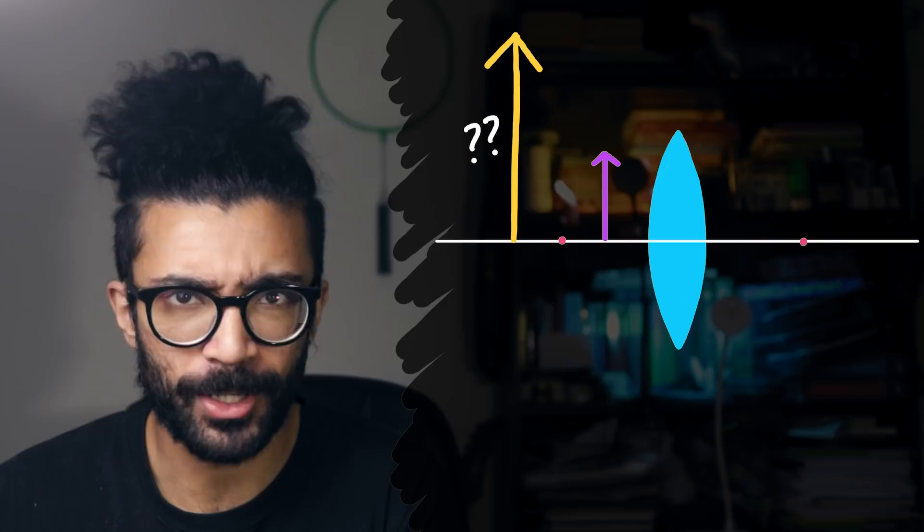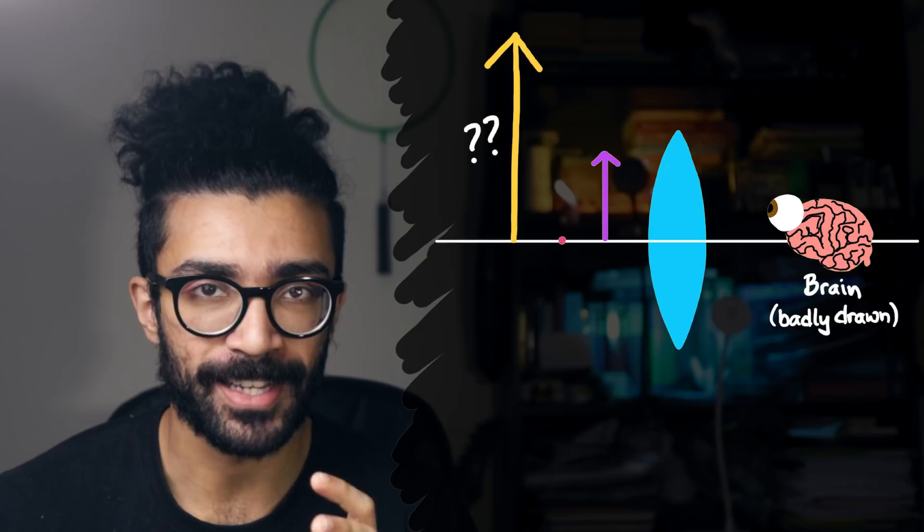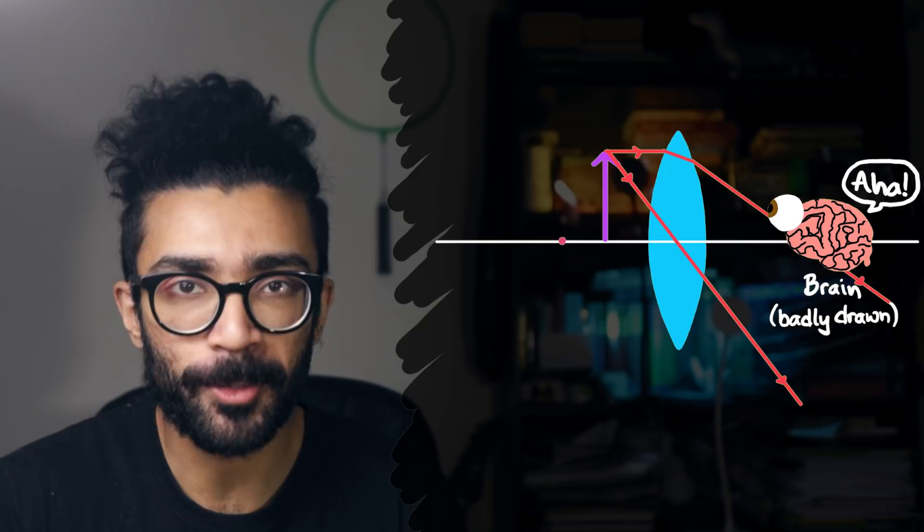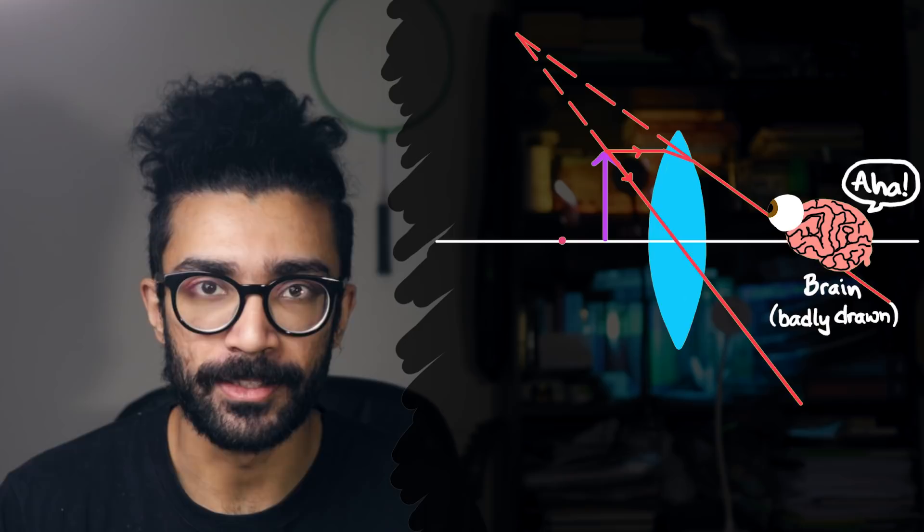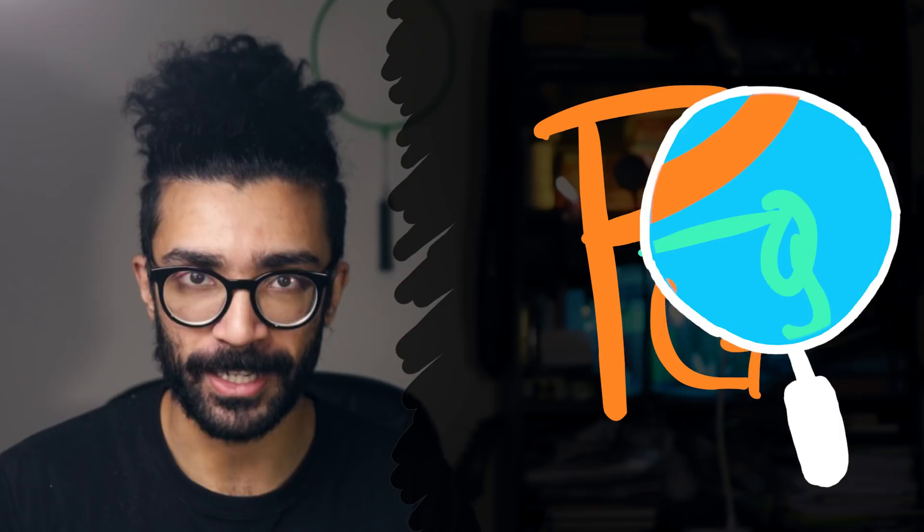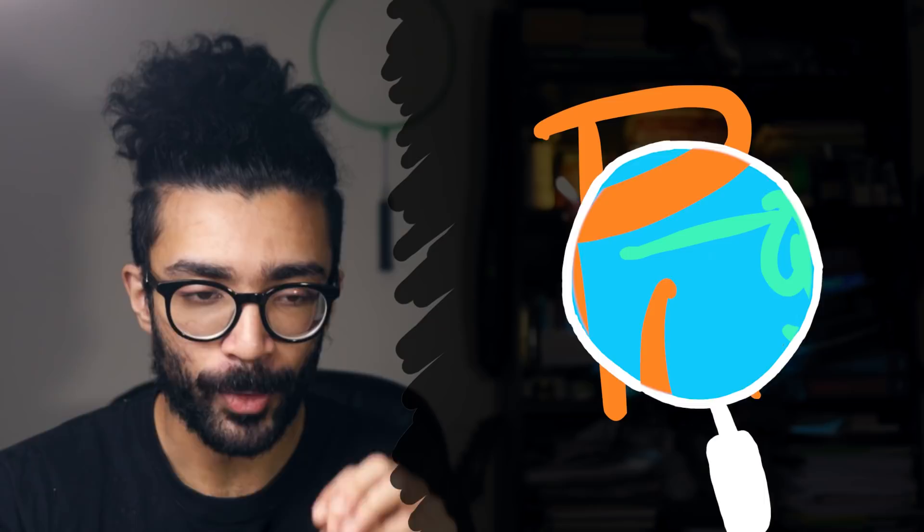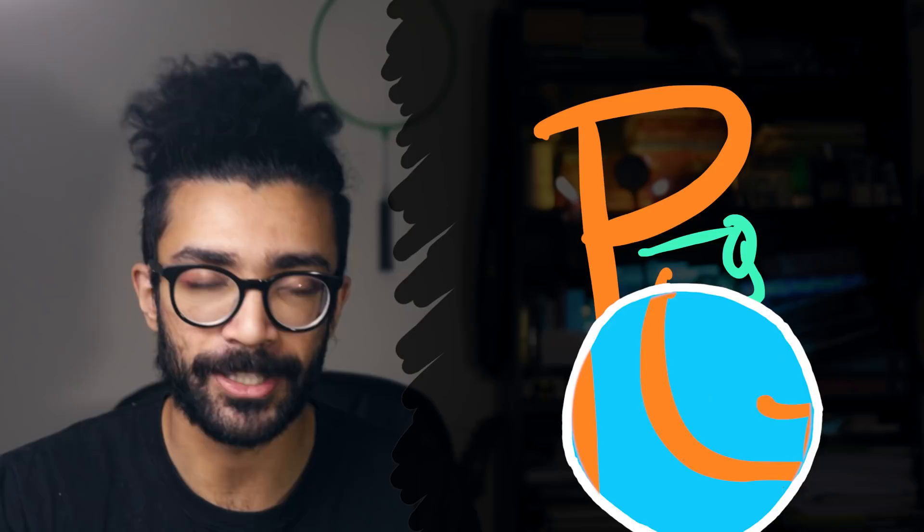As it so happens, our brains do exactly what we've just described. When diverging rays of light enter our eyes, our brain interprets them as if coming from a source. So what our observer actually sees when looking through the lens is the image and not the object. This is why a magnifying glass works in the first place. If we place an object closer to it than its focal point, and we look through the magnifying glass, we don't actually see the object. We see the image of the object, which in this case is bigger than the object itself.